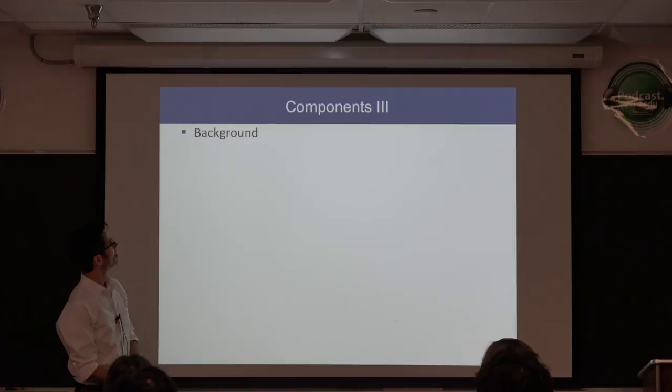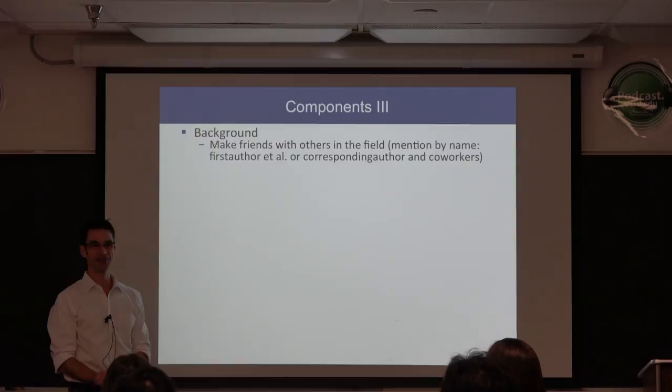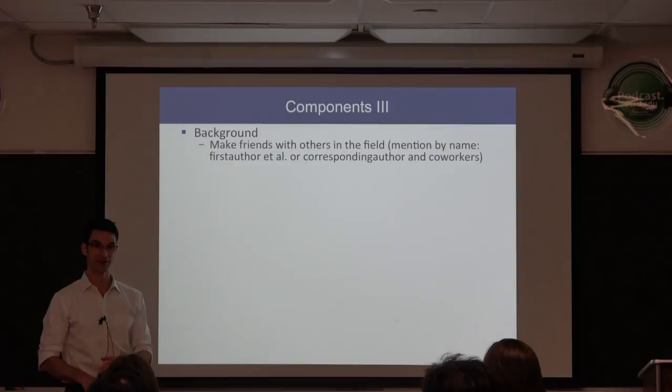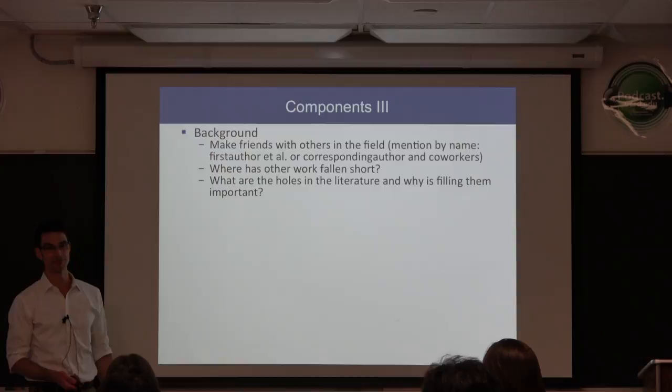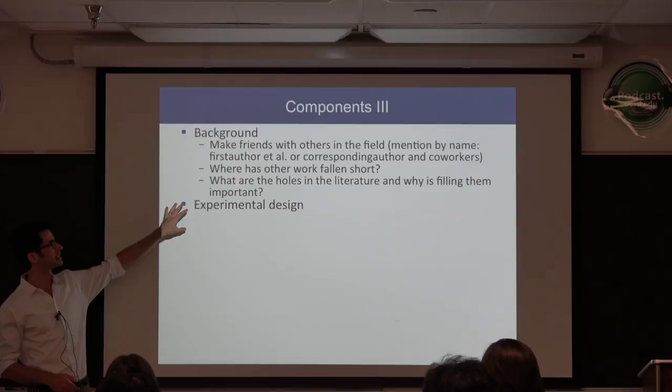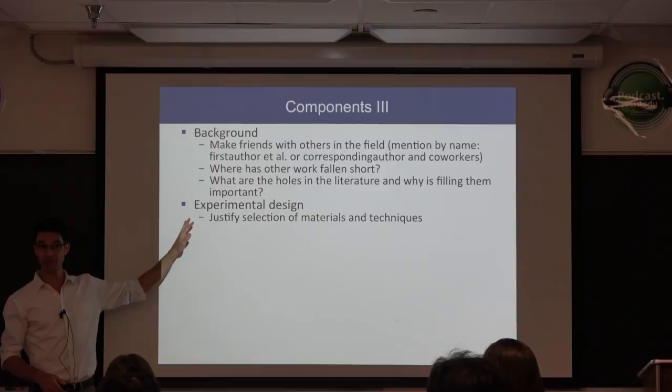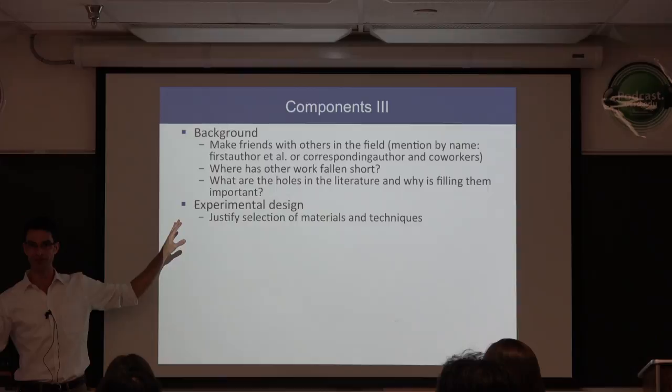The background, which comes after the introduction, allows you to make friends with other people in the field — literally, by naming them by name: 'So-and-so et al. did this, and because of their work, new questions have come up that we're trying to answer.' What are the holes in the literature? Why is filling those holes important? Experimental design sometimes has an explicit section after the background but before the results — it's a justification of why you did what you did, not the experimental methods yet.